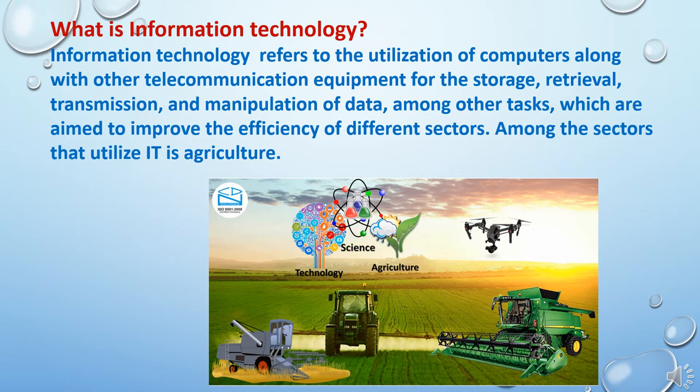What is information technology? Information technology refers to the utilization of computers along with other telecommunication equipment for the storage, retrieval, transmission, and manipulation of data, among other tasks which are aimed to improve the efficiency of different sectors. Among the sectors that utilize information technology, agriculture is one of the important sectors.